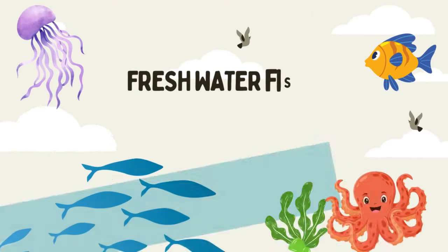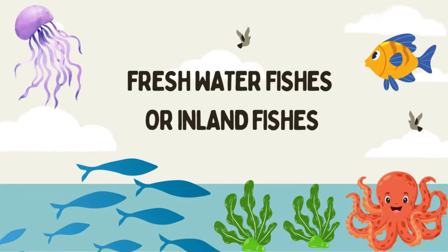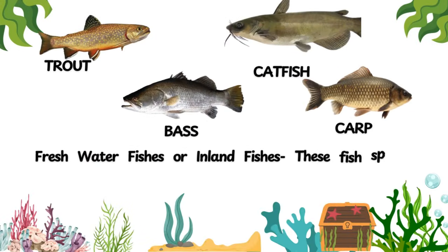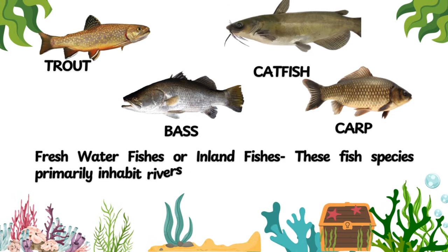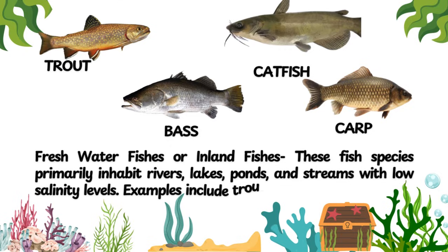Freshwater Fishes or Inland Fishes. These fish species primarily inhabit rivers, lakes, ponds, and streams with low salinity levels. Examples include trout, bass, catfish, and carp.